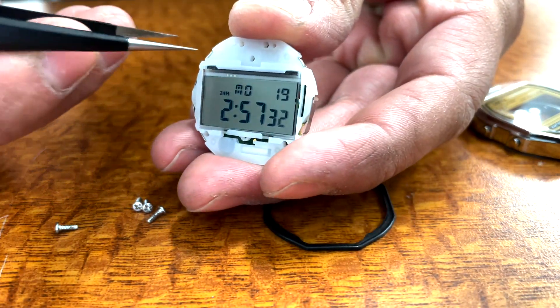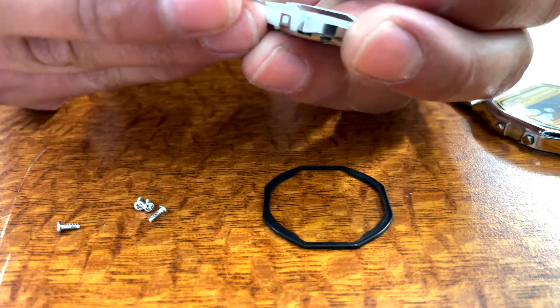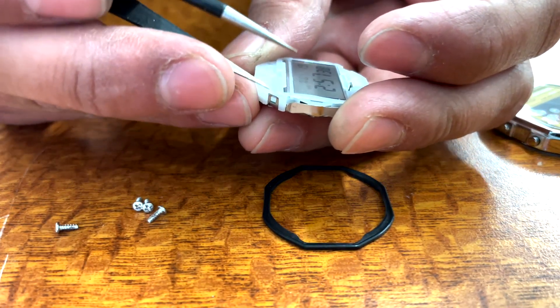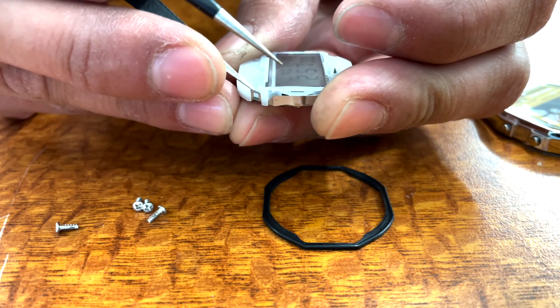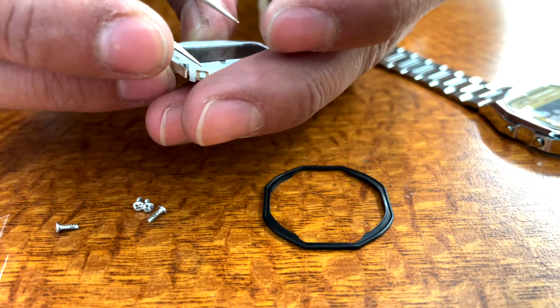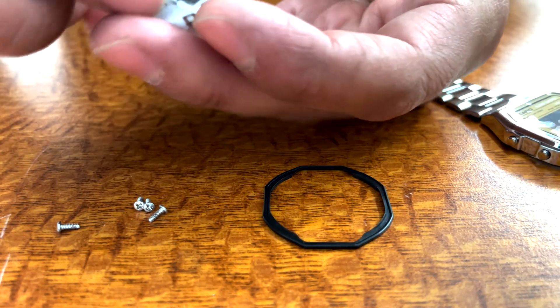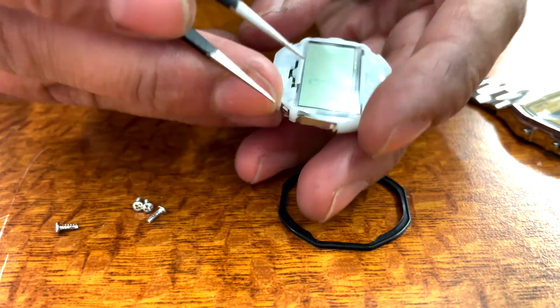From here, we're going to use our tweezers or a fingernail to disengage the four metal tabs holding the back retaining clip onto the white plastic enclosure. Carefully pull the tab away from the white plastic enclosure until the tab disengages, and then repeat the process for each of the four tabs at the four sides of the plastic enclosure.